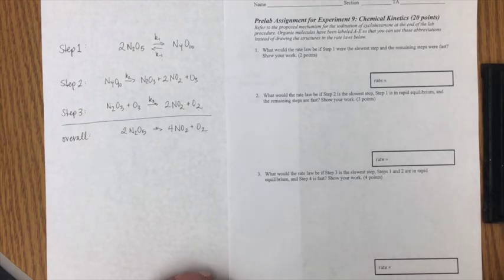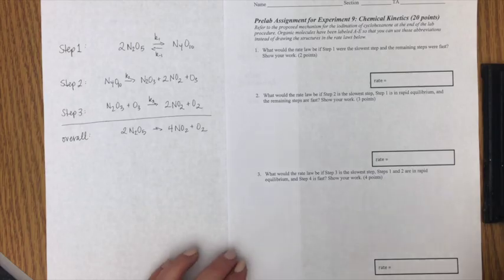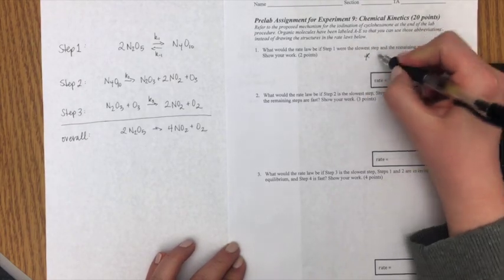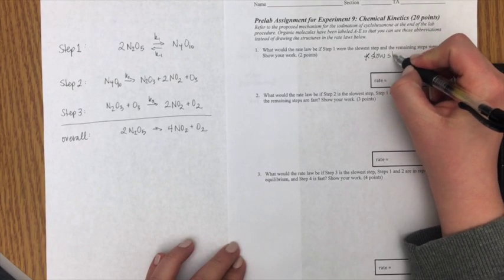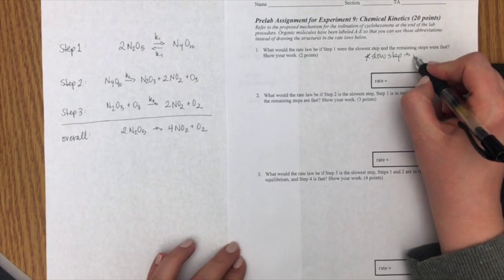So the first thing that we need to know in order to be able to do this is that our rate law is always going to be related to the slowest step or the rate limiting step. So I'll just write that down. So the slow step will give us our rate law.